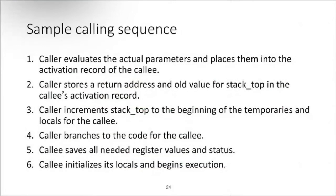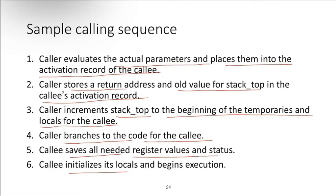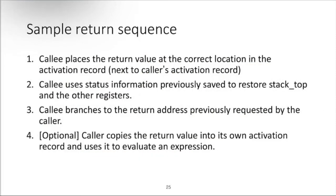In a simple calling sequence: the caller evaluates actual parameters and places them into the callee's activation record; the caller stores a return address and old top-of-stack value in the callee's activation record; the caller increments the top of stack to the beginning of temporaries and locals of the callee; the caller branches to the code for the callee; the callee saves all needed register values and status, initializes locals, and begins execution.